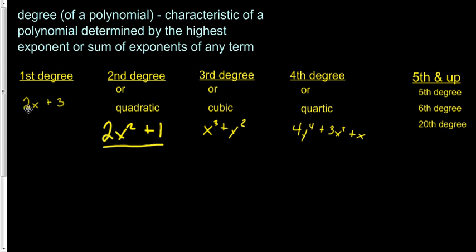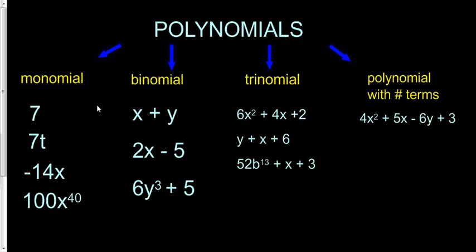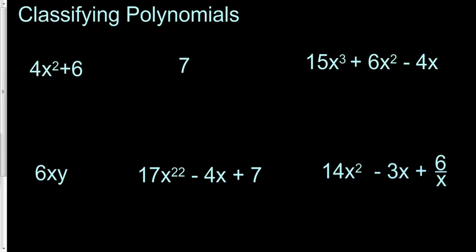You've got two options. We can go through and classify it by the degree or the highest exponent. Or we can count up how many terms is in each polynomial: monomials, binomials, trinomials, or a polynomial with a count of how many terms there are. It's just two different ways that you can classify a polynomial, and sometimes they want you to do it both ways.